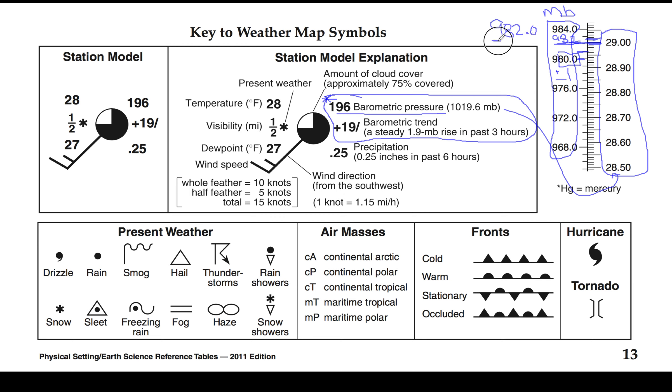What we do is we just drop the first number or the first two numbers. Remember that when we converted to a station model we added the 9 or the 10; in this case we're just going to drop it. So you're always going to take the last three numbers. So in this case I would put 820 as my barometric pressure.